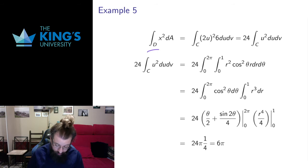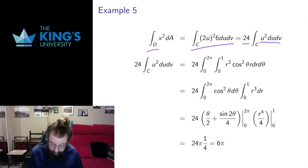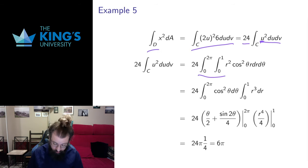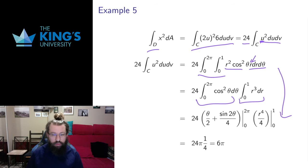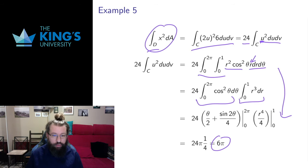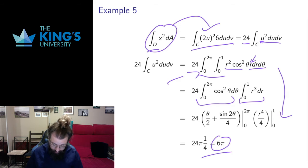Even if the original region doesn't have circular symmetry, a linear substitution can turn it into a unit circle, at which point polar coordinates give another simplification. So this is a chain of two changes of variables. I go from xy to uv to get a unit circle, pull out the constants, then change uv to polar coordinates with bounds 0 to 2 pi and 0 to 1. u turns into r cos theta, so u squared becomes r squared cos squared theta, with Jacobian r. The integral is separable, and I calculate that the value of the integral of x squared over the original ellipse is 6 pi.